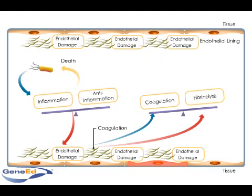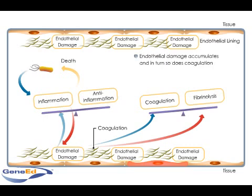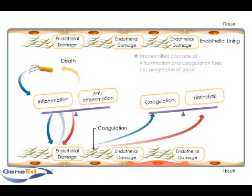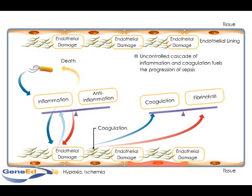Left unopposed, the endothelial damage accumulates, and in turn, so does coagulation. This cycle of uncontrolled inflammation and coagulation fuels the progression of sepsis, resulting in hypoxia, widespread ischemia, organ dysfunction, and ultimately death for a large number of patients.